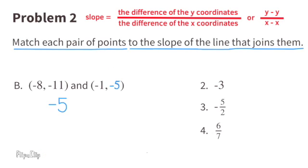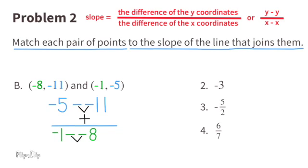B: The y value negative 5, minus the y value negative 11. That's minus a negative, which is the opposite of a negative, so it becomes positive. Negative 5 plus 11 over negative 1 minus negative 8, which is the same as negative 1 plus 8. Negative 5 plus 11 is 6, and negative 1 plus 8 is 7. So the slope of this line would be 6 over 7.